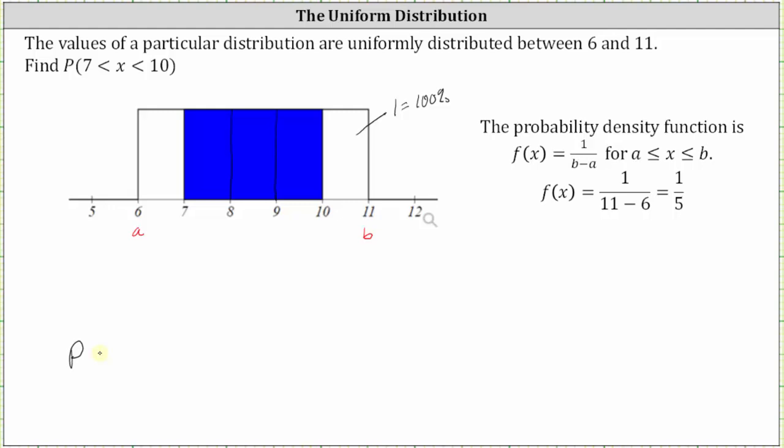This tells us the probability that x is greater than seven and less than 10 is equal to three fifths, or as a decimal, three divided by five is equal to 0.6.